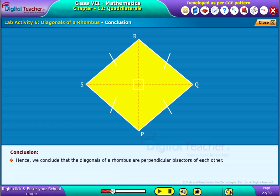Hence, we conclude that the diagonals of a rhombus are perpendicular bisectors of each other.